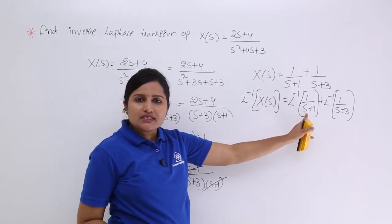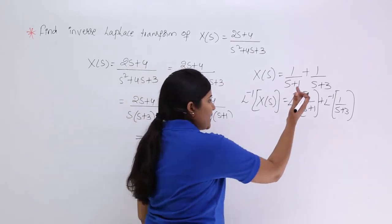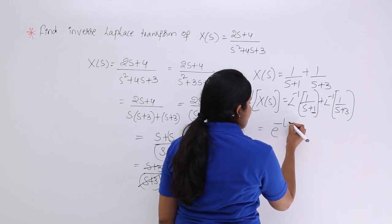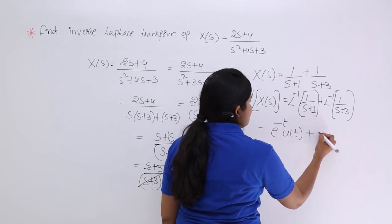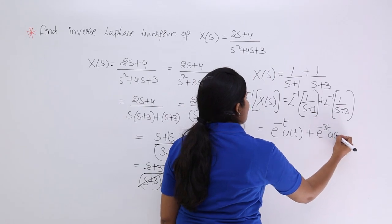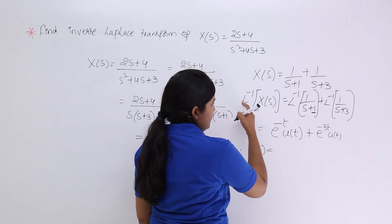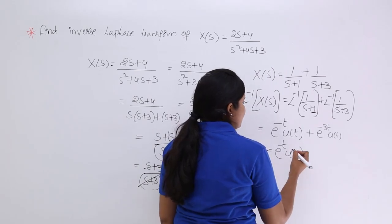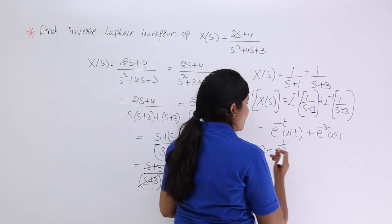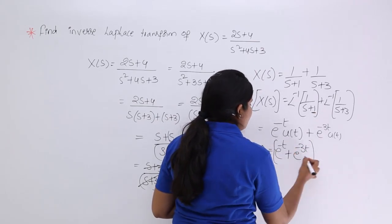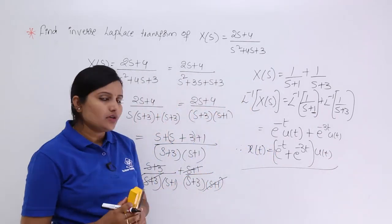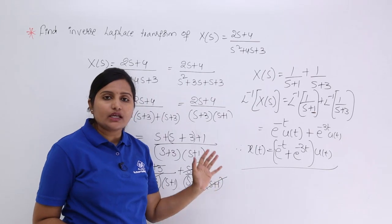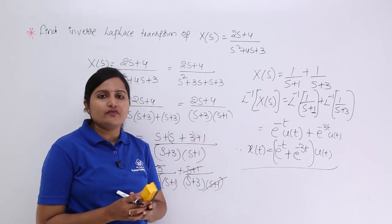Whenever the transform is in the form 1/(s + a), the corresponding signal is e^(−at) u(t). So with a = 1 we get e^(−t) u(t), and with a = 3 we get e^(−3t) u(t). Therefore x(t) = e^(−t) u(t) + e^(−3t) u(t), which can also be written as (e^(−t) + e^(−3t)) u(t). In this way, by separating the numerator and factoring the denominator, you can find easy solutions for inverse Laplace transforms.